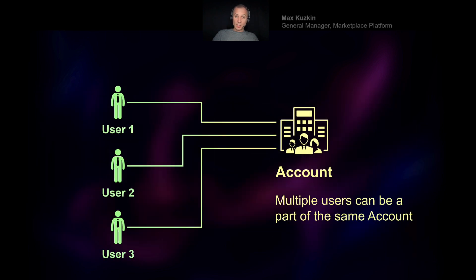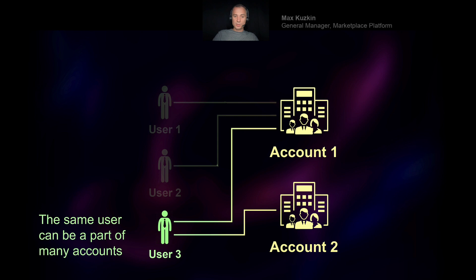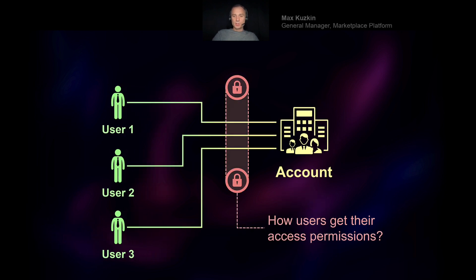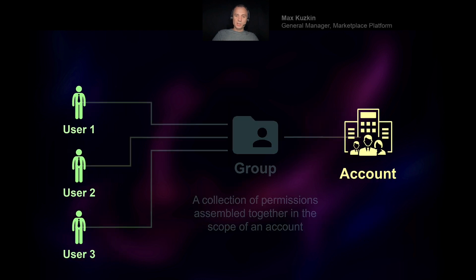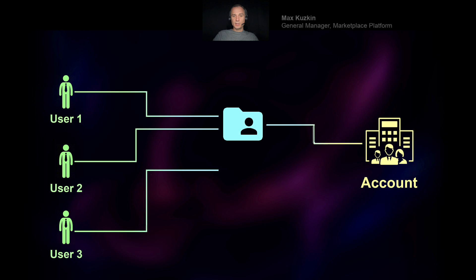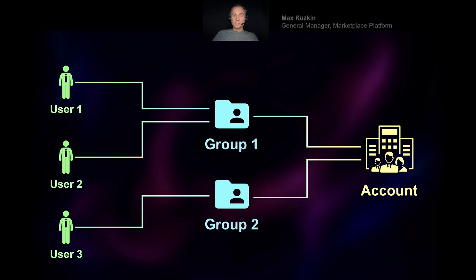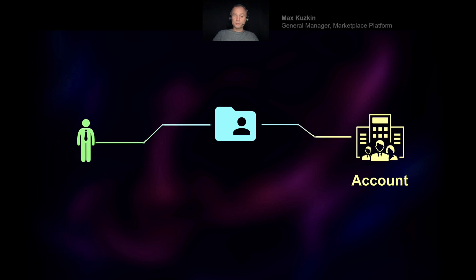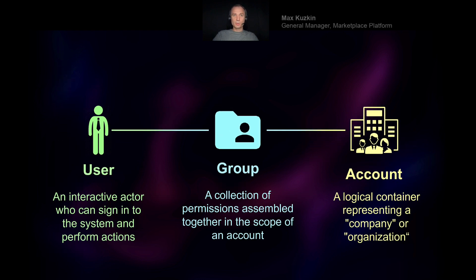An account may include multiple users, and users may belong to more than one account. Between accounts and users, we manage permissions through an object called a group or user group — a collection of permissions grouped together. Users are assigned to a group and may be members of more than one group. This is how users get their permissions within the scope of a given account. The three objects to remember are: user, group, and account.